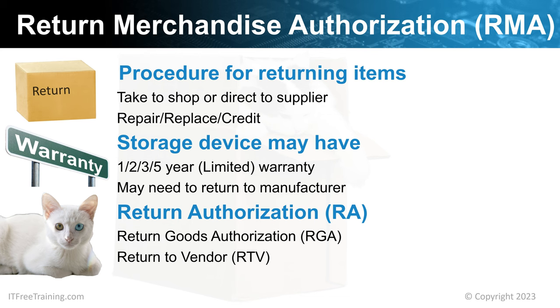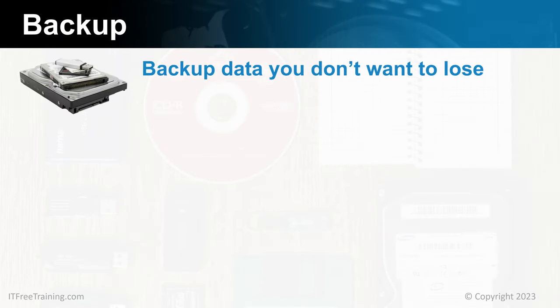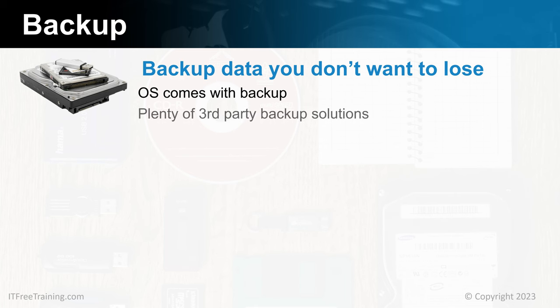In some cases, the storage device fails and you may not be able to get the data off before it does so. You should expect that the storage device will fail at some time because they don't last forever. If you value your data, you should back it up. The OS and data can be very big, so if you can't back up all of it, have a look at what you can't afford to lose. USB sticks hold a lot of data nowadays — more than enough to hold your irreplaceable photos or important documents. To protect yourself from events like your house burning down, you can always leave the USB stick at a friend's house. The operating system should come with a backup facility, and if not, there are plenty of third-party solutions.